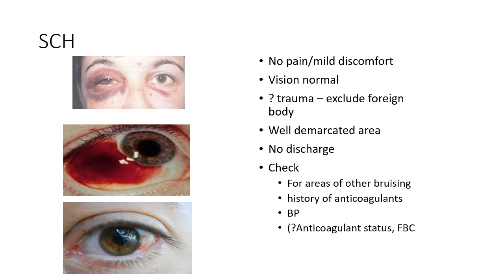Other causes include bleeding disorders, acute febrile systemic infections, and vicarious bleeding. The patient is without pain or has mild discomfort, and vision is normal. The subconjunctival hemorrhage has a well-demarcated area. You should check for other areas of bruising, history of anticoagulants, blood pressure, and anticoagulant status.